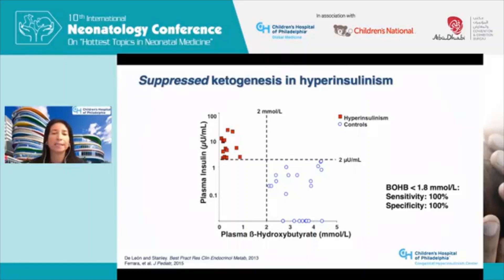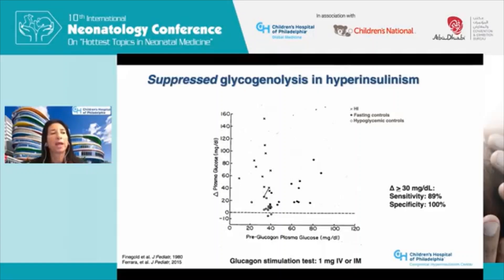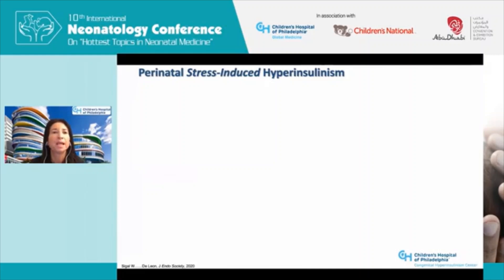The glycemic response to a pharmacologic dose of glucagon is also evaluated. The recommended dose is 1 mg glucagon intravenously or intramuscularly, and we look at the plasma glucose response within the first 40 minutes. An increase in plasma glucose greater than 30 mg/dL has a sensitivity of 89% and specificity of 100% for hyperinsulinism. To summarize: we look for detectable insulin, suppressed ketones, and a glycemic response to glucagon — but lack of detectable insulin does not rule out hyperinsulinism, as sensitivity is only 82%.